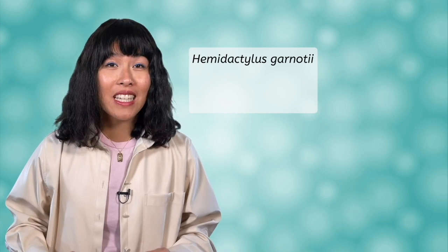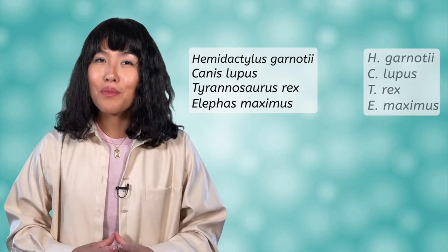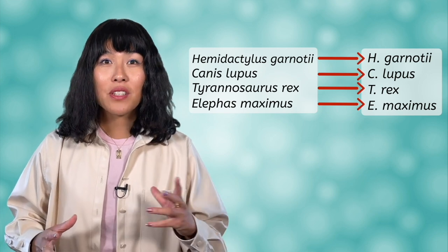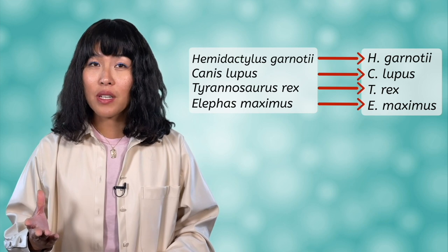Think back to all of the scientific names we have reviewed in this video — do you notice a pattern? Carl Linnaeus, a Swedish biologist in the 18th century, developed the process of naming organisms using their genus and species, as well as how they are written. The entire name is written in italics, and the genus is capitalized while the species is not. Examples include: Hemidactylus garnoti, Canis lupus, Tyrannosaurus rex, and Elephas maximus. Sometimes you will see the genus name abbreviated, but the species name is never abbreviated. So when writing the scientific name for a dog, you can write either Canis lupus or C. lupus.